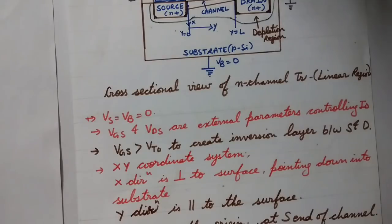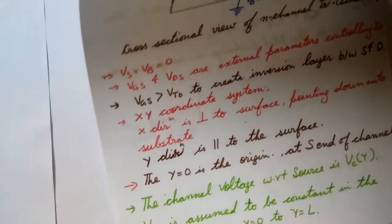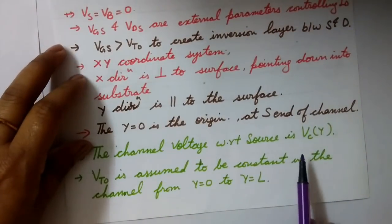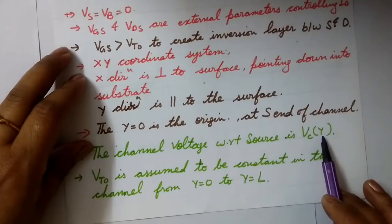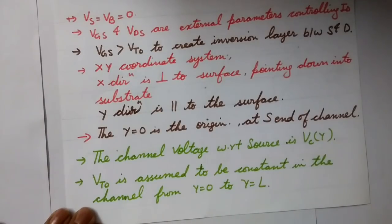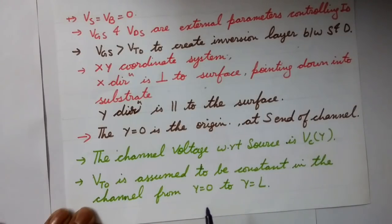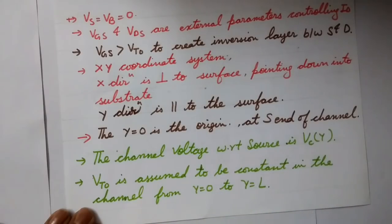The voltage inside the channel is different at different points — as the channel length varies, the voltage also varies. We write this channel voltage with respect to the source as VCY, where C denotes channel voltage and Y denotes the position along the channel. The threshold voltage VT0 is assumed to be constant throughout the channel from 0 to L, though this is just an approximation, since the threshold voltage actually depends on the channel voltage.